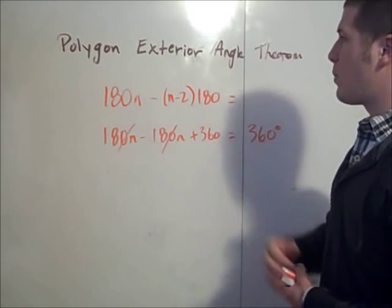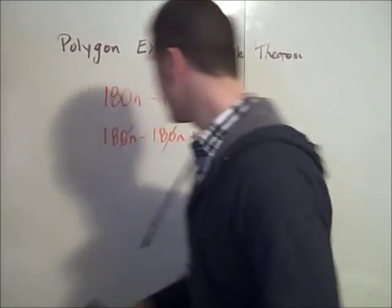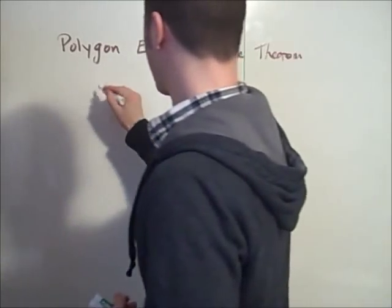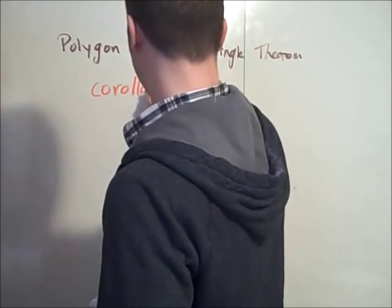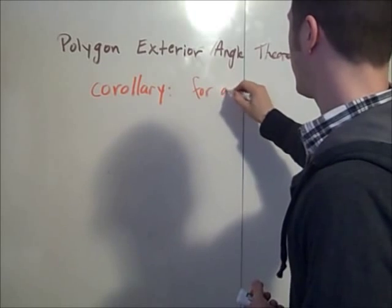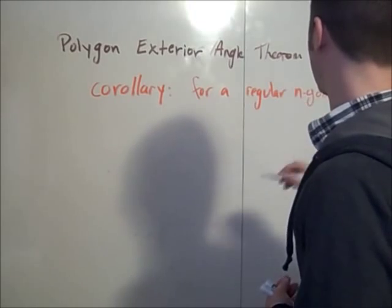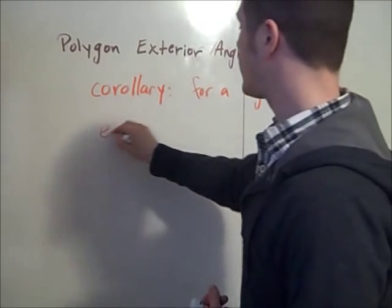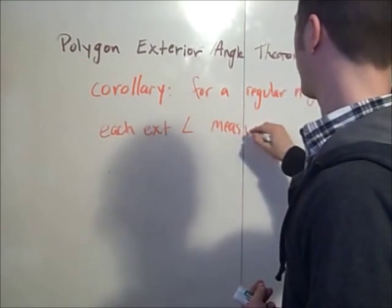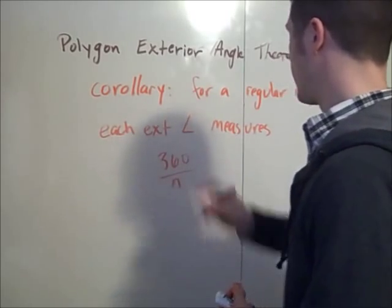That is a very short proof. That is the Polygon Exterior Angle Sum Theorem, and it has a really neat corollary. With the corollary, if the n-gon is regular — so for a regular n-gon — each exterior angle measures 360 over n.